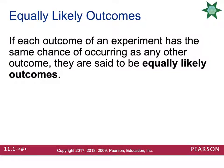If each outcome in an experiment has the same chance of occurring as any other outcome, it's going to be called equally likely outcomes. So an example is flipping a coin. Flipping a head versus flipping a tail is equally likely.